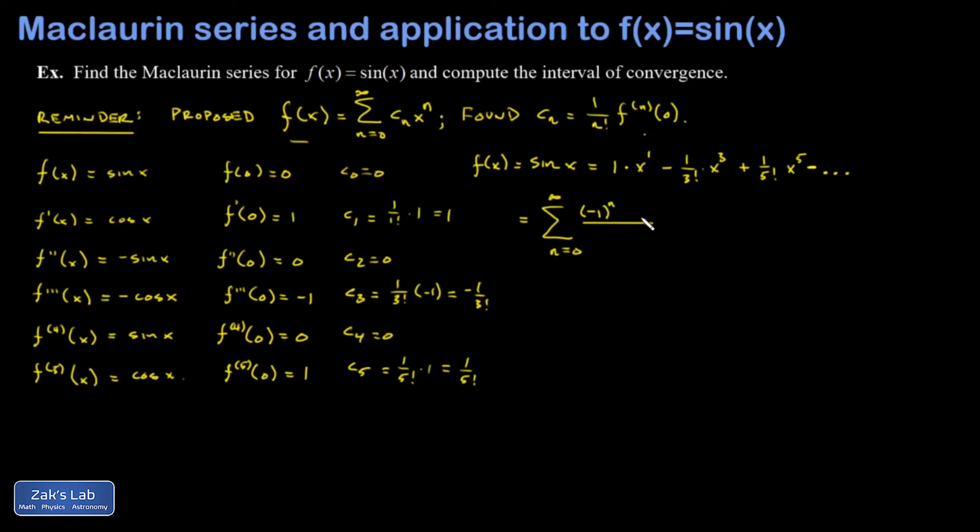And then I need only the odd powers of x as I plug in higher and higher values of n. Starting with x to the first. So that looks like 2n plus 1. Plug in 0 for n and you get 1. Plug in 1 for n and you get 3. And so on. I also want just the factorials of these odd terms. So 2n plus 1 factorial. And there we have it. That's the sine function expanded into a power series.